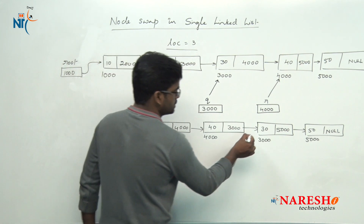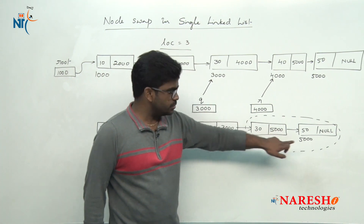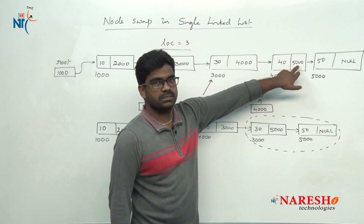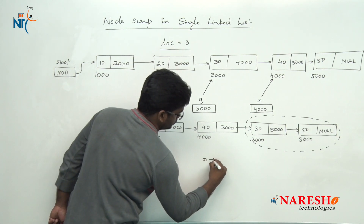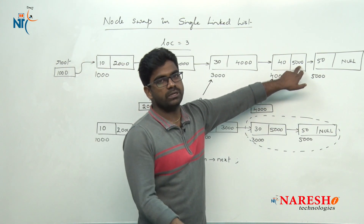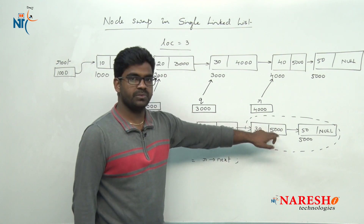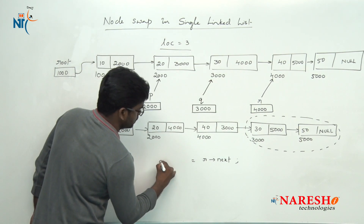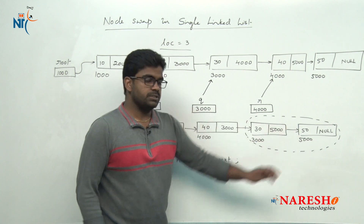Now perform the connections from right to left. First connection: store r→next (which is 5000) into q→next. So 4000→next, which is 5000, is stored into q→link (q is 3000). This is the first connection — the third node now points to the fifth node.